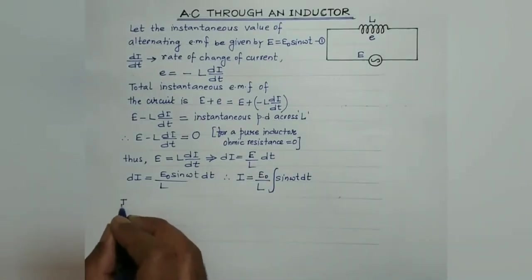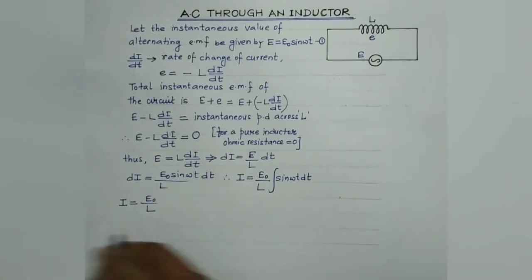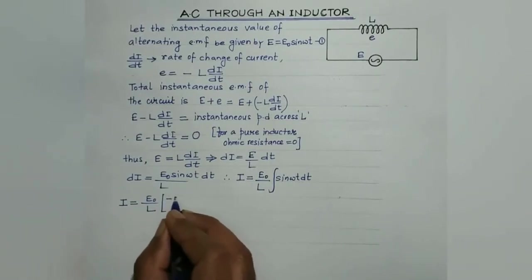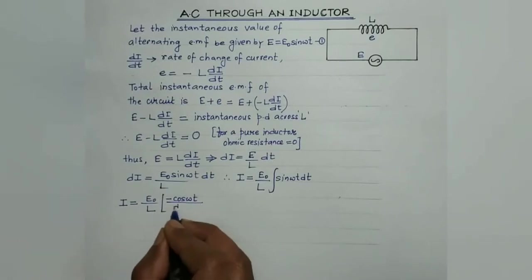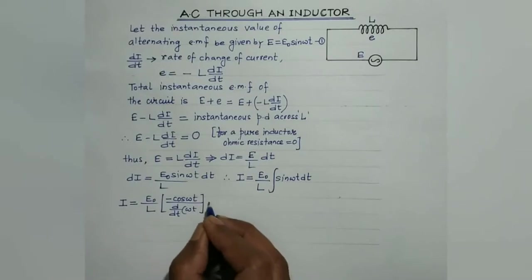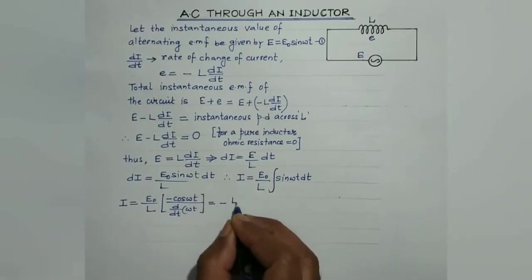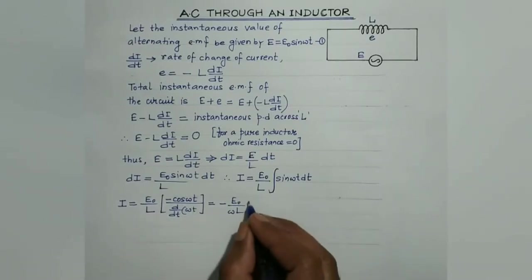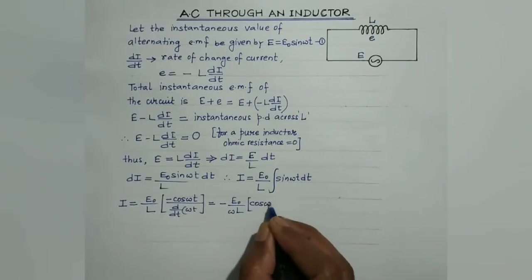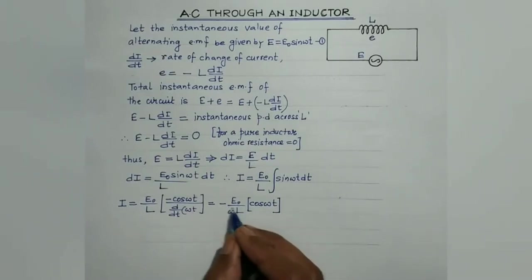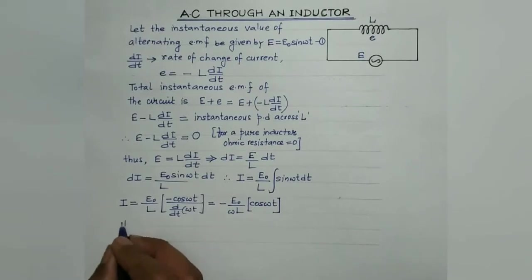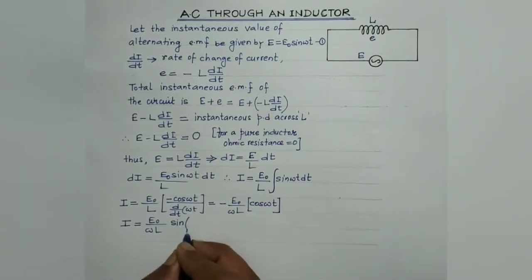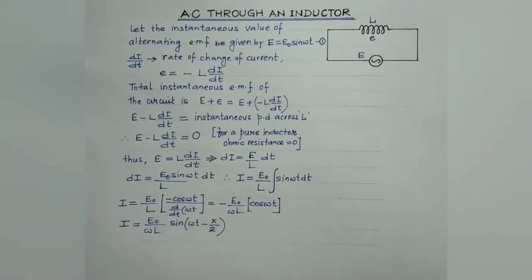The instantaneous alternating current is given by E₀/L. The integration of sin ωt is minus cos ωt divided by the differentiation of ωt, which gives minus cos ωt divided by ω. So we get minus E₀/(ωL) cos ωt. Now, this minus cos ωt may be represented as sin(ωt minus π/2).